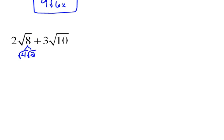8 we could rewrite into 4 times 2. And then if we take the square root of both of those, square root of 4 is 2. So that would simplify to 2 square roots of 2. But don't forget we have this 2 on the outside. So that entire term technically is 4 square roots of 2.